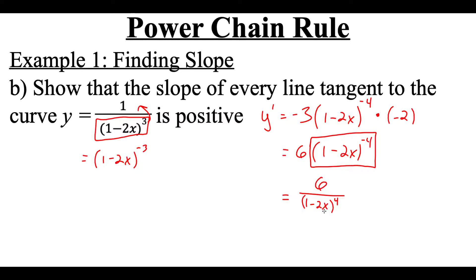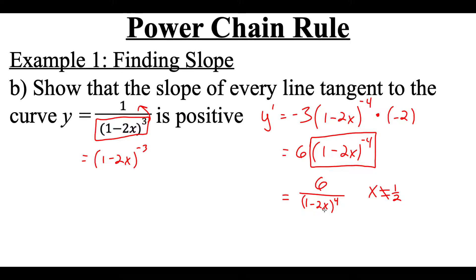We need to be careful about the x values we're plugging in because we're dealing with a fraction. We don't want x to be 1/2, because then the denominator would be 0. But for every non-1/2 number, the top is always a positive number. And regardless of what we plug in on the inside, as long as it's not 1/2, raising whatever number is inside to an even-numbered power will always turn positive. So a positive number divided by a positive number always results in a positive answer, which verifies that every x value along this curve will have a positive slope.